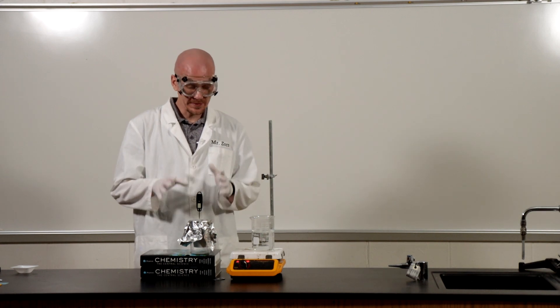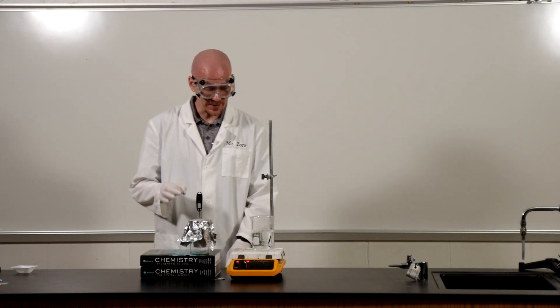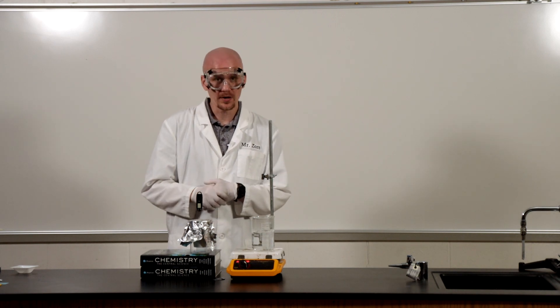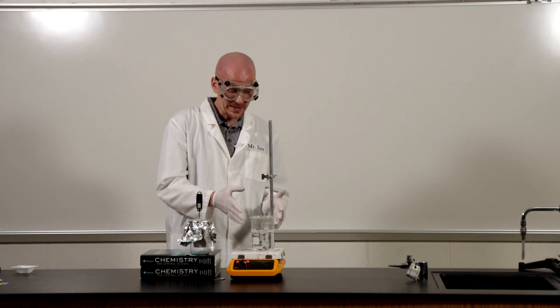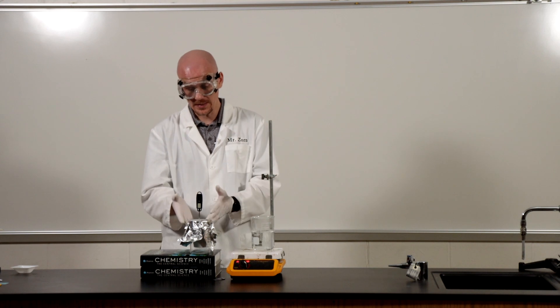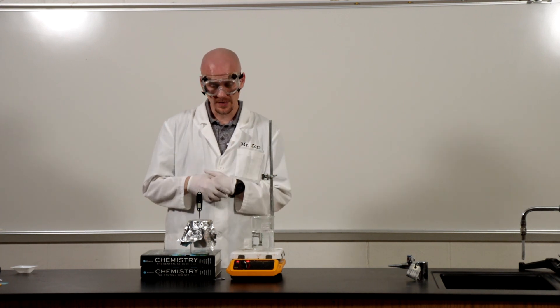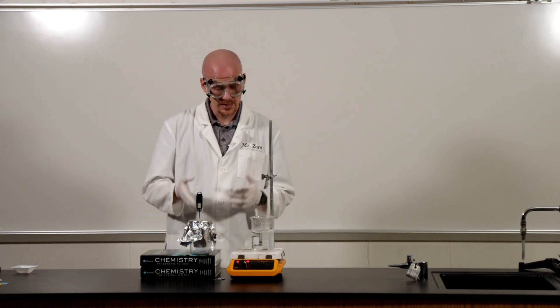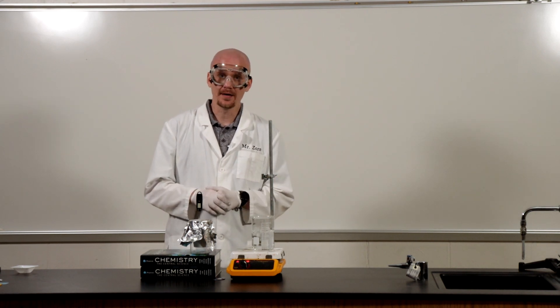So you should have all the information you need now to figure out the specific heat. We had a certain temperature of our water, our initial temperature of our water. We heated our metal. We put the metal into the calorimeter. It raised the temperature of that water. So using that change in temperature now you should be able to work backwards and find the specific heat capacity of our metal.